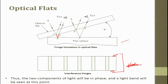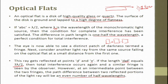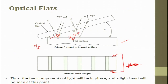What we are trying to say is: this is an optical flat with a flat surface, and to measure the flatness of that surface we use an optical flat. Light from the source reflects at point A, reaches the workpiece, reaches the flat bottom side. If the path is lambda by 2 and then 3 lambda by 2, total interference occurs. Placed at a small angle theta, it reflects from A, B, C — that is lambda by 2 — and D, E, F at 3 lambda by 2, forming total interference. Thus the two components of light are in phase and a light band is seen at that point.